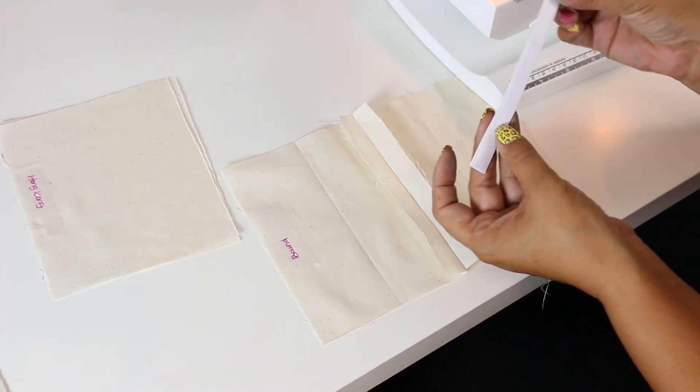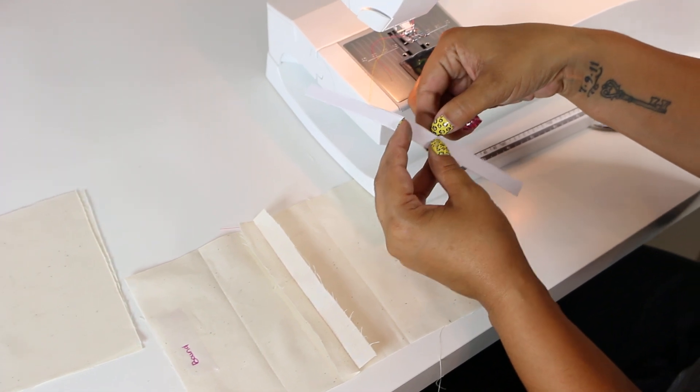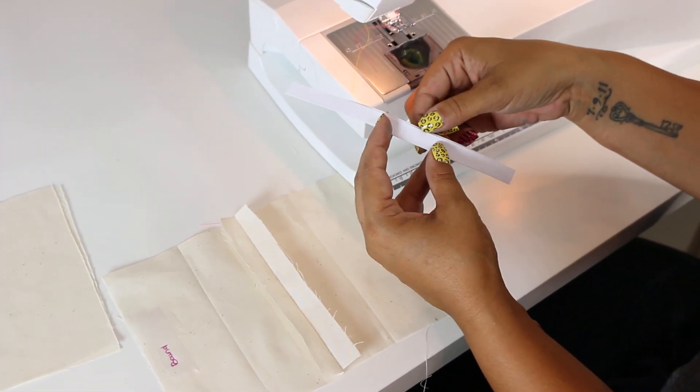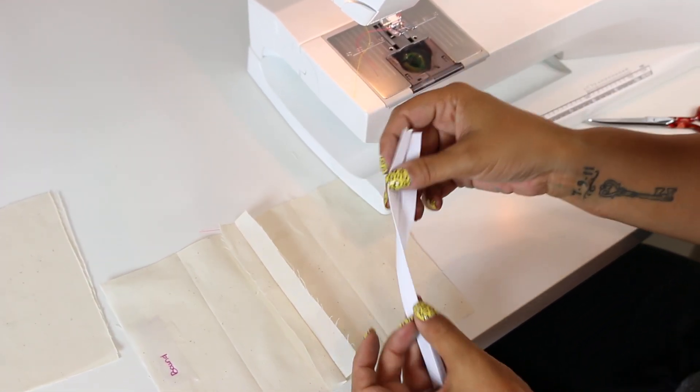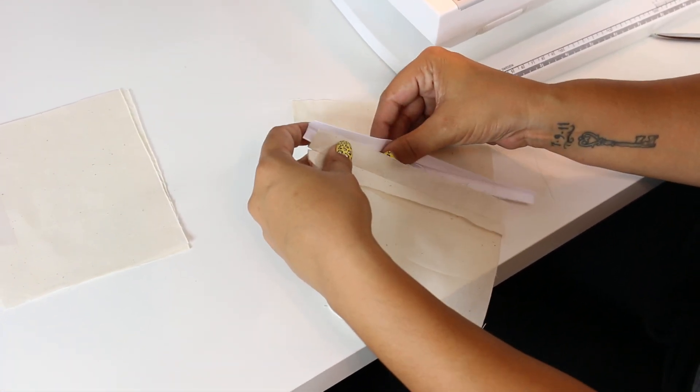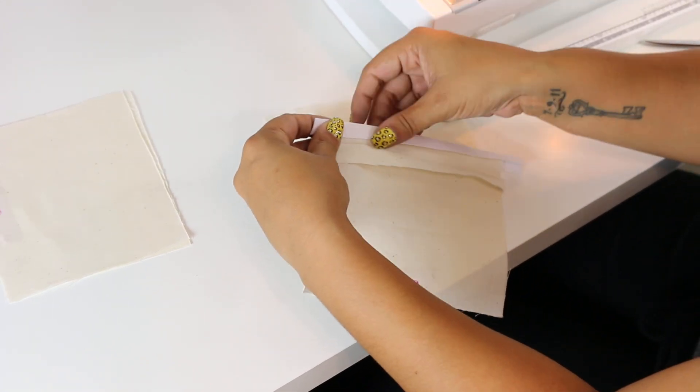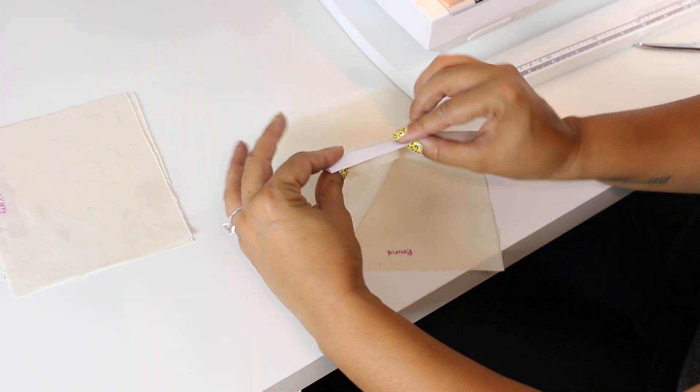In your binding, you can see that one side is slightly wider than the other. That's the part that goes underneath. You want to place your seam allowance inside, making sure that the wider part of the binding is on the bottom.